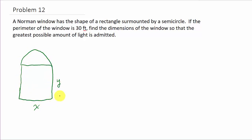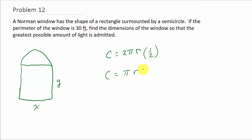On the rectangular part we don't have a problem, but on top we have a semicircle. The circumference of a circle is 2π times the radius, or π times the diameter. Since we have a semicircle, we multiply by one-half, so the arc length of the semicircle is π times the radius.